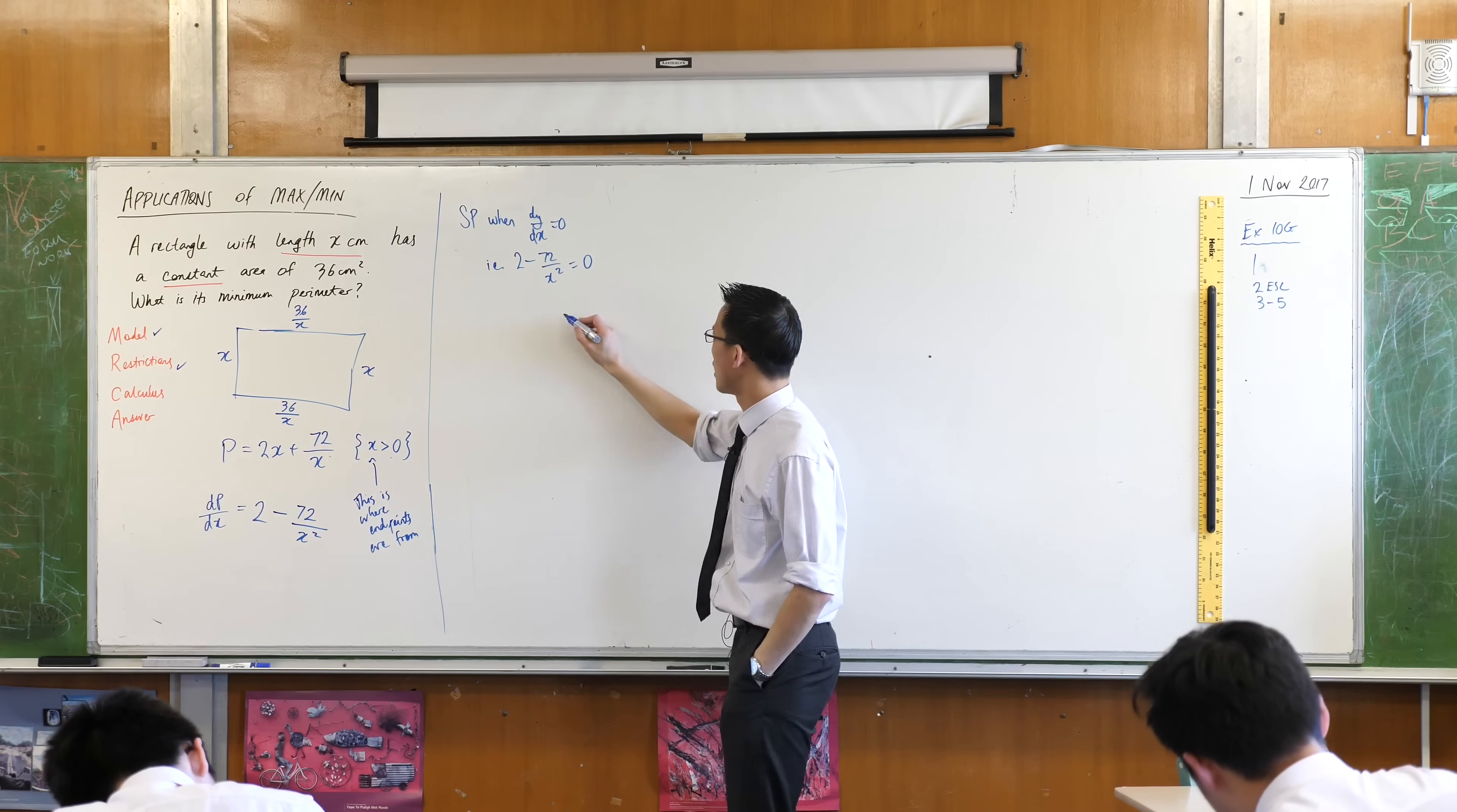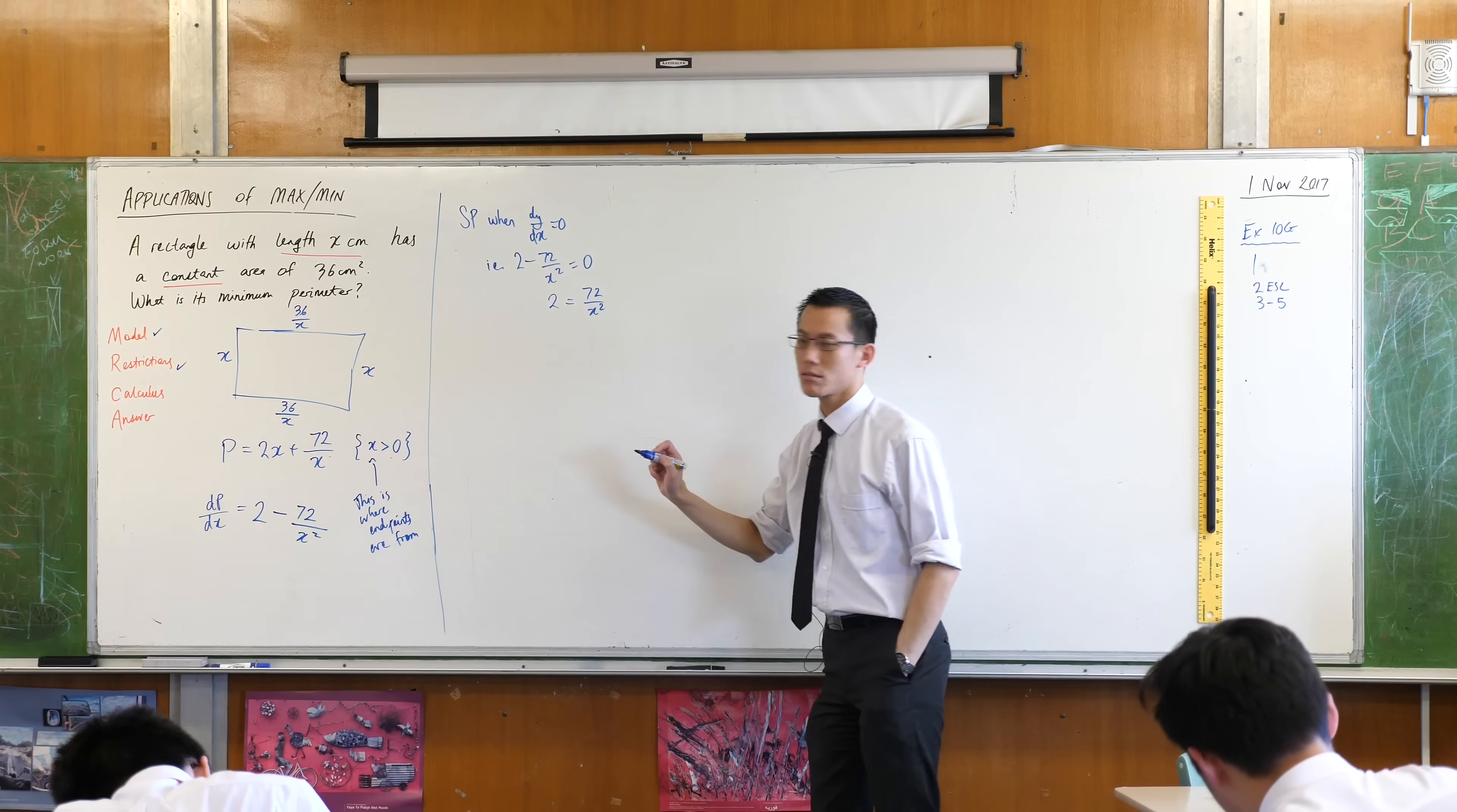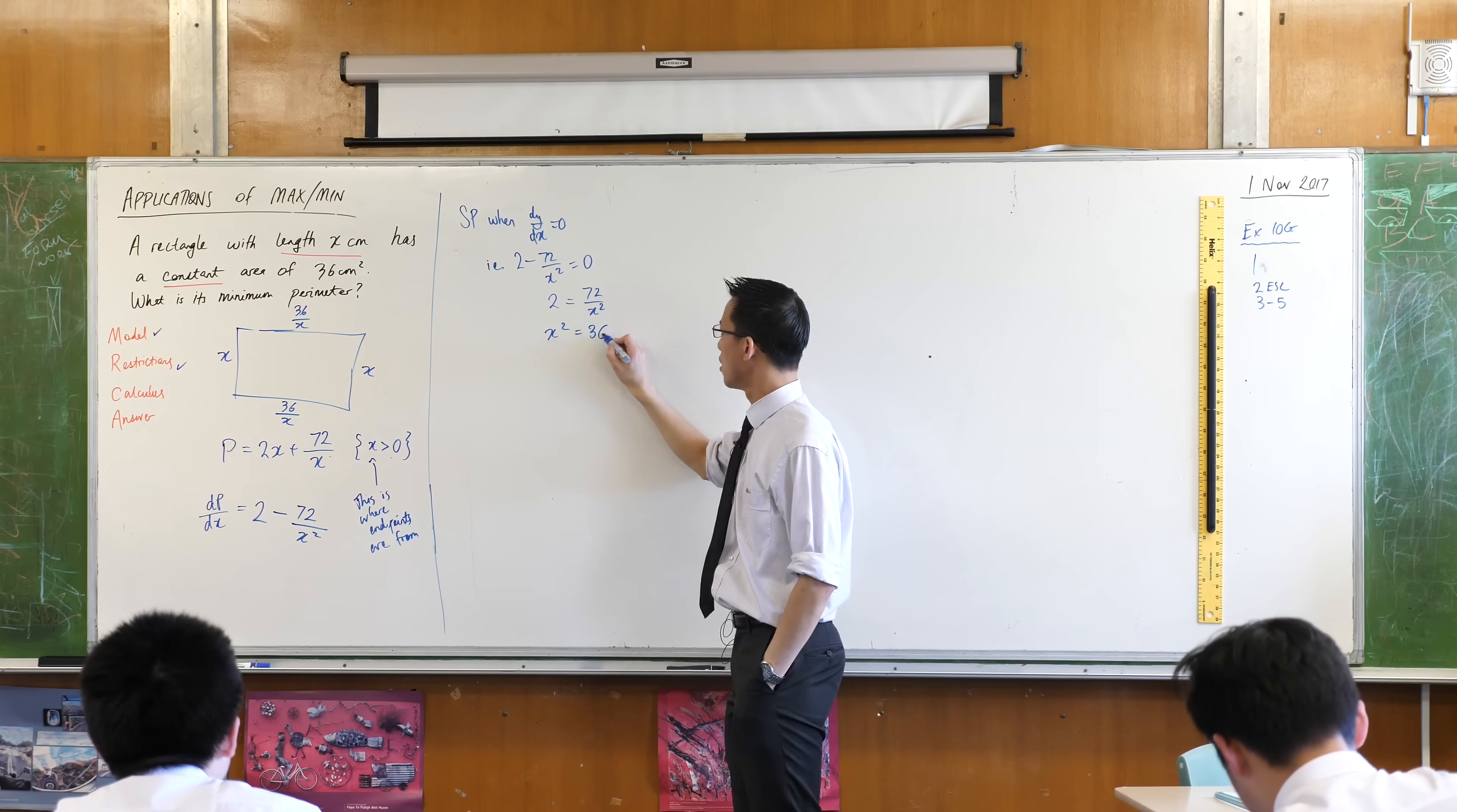So when I go ahead and try and map this out, I'm going to get this. I'm going to multiply and I'm also going to divide. So that gives me this on this.